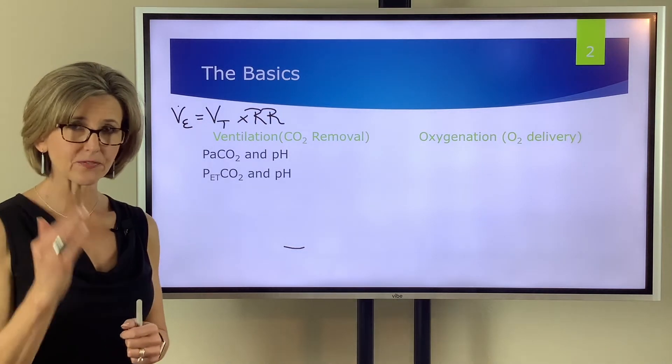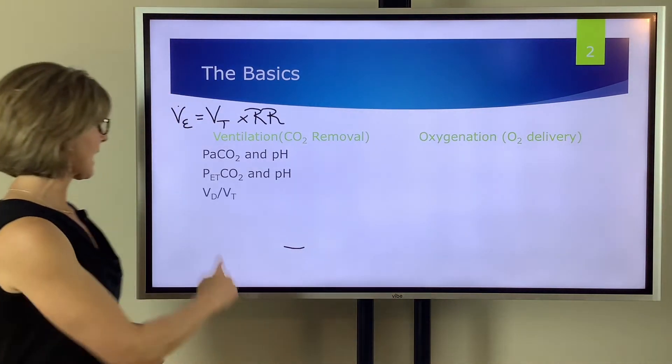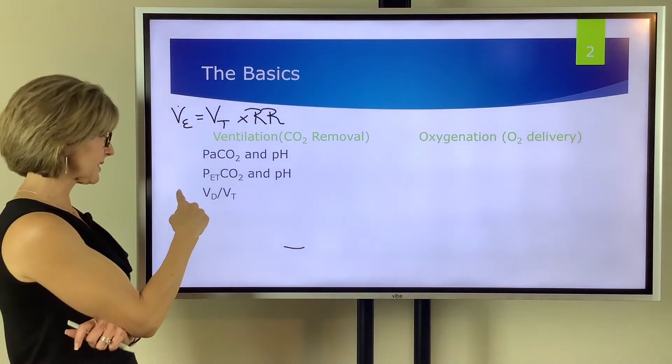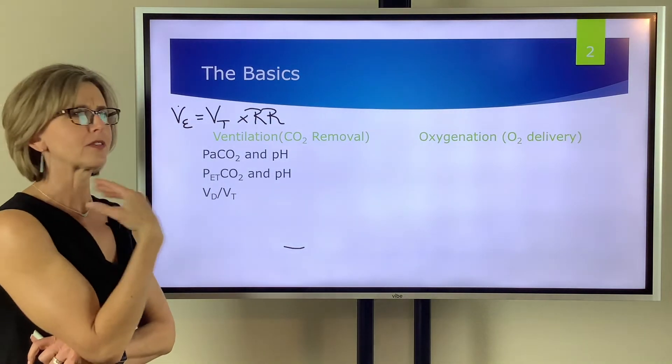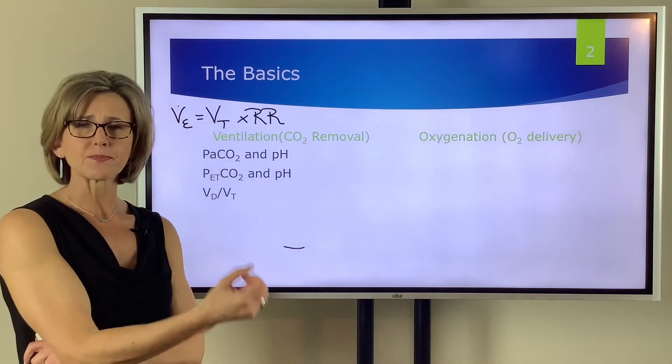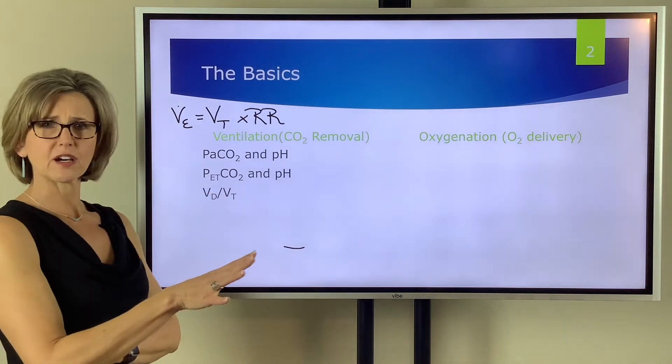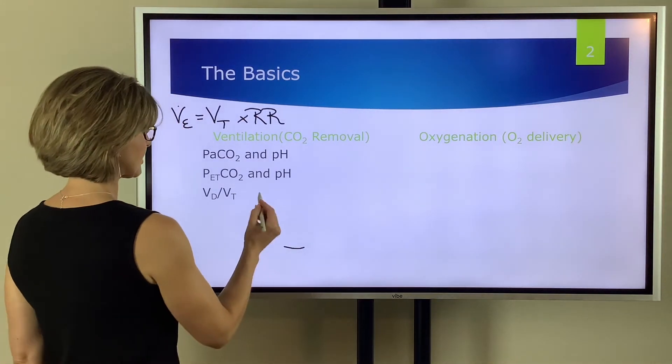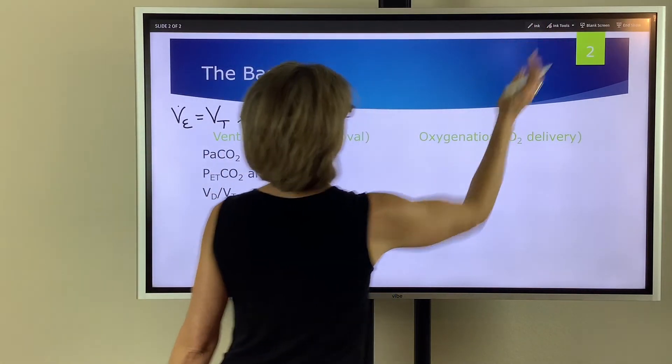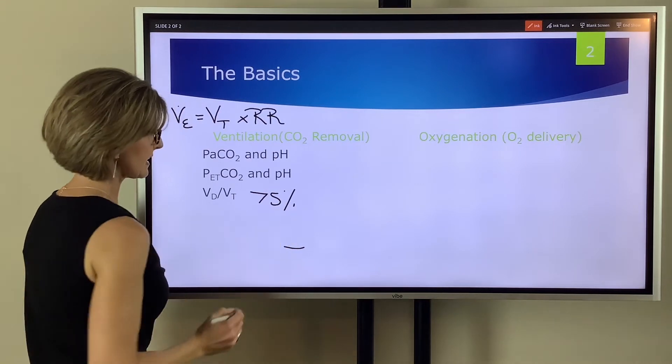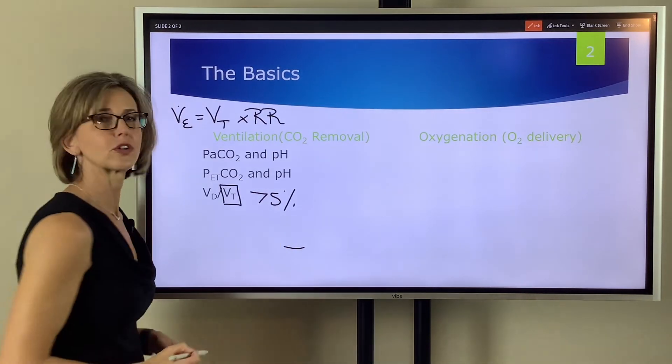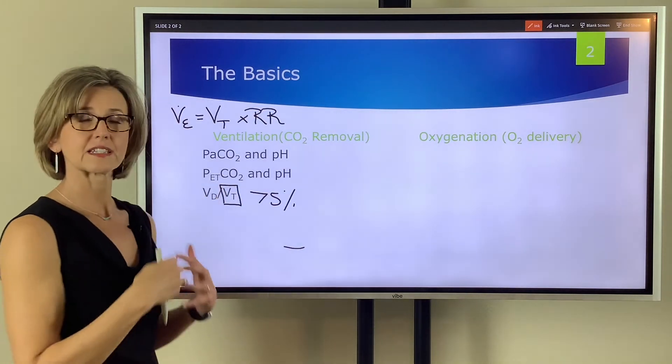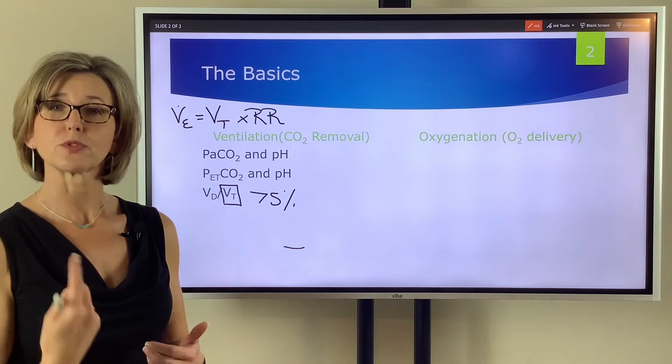We can look deeper and see how efficiently CO2 is being removed by looking at physiologic dead space. So this formula VD to VT is the formal name, physiologic dead space. We call it VD to VT ratio, dead space ventilation. But basically when you do the formula for this, this physiologic dead space will calculate out into a percentage. So let's say if our patient's physiologic dead space is 75 percent, what that means is 75 percent of the tidal volume is not removing CO2. So this is a very effective formula to tell us how efficiently our tidal volume is removing CO2 from our bloodstream.